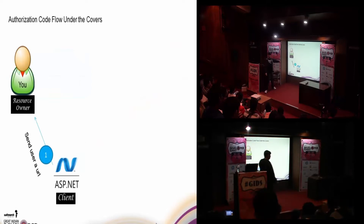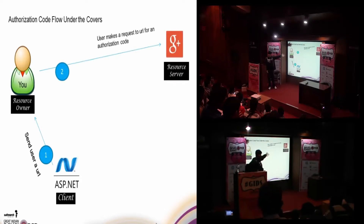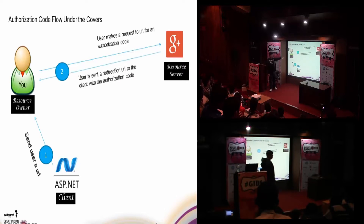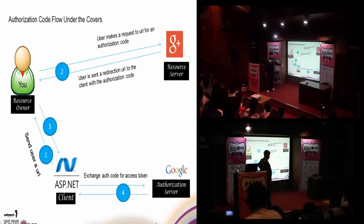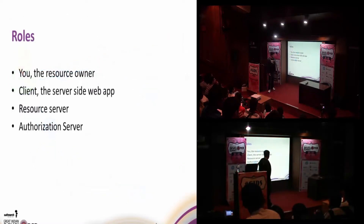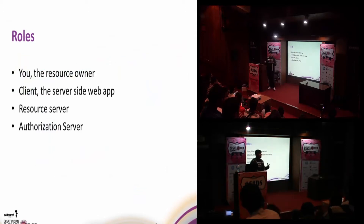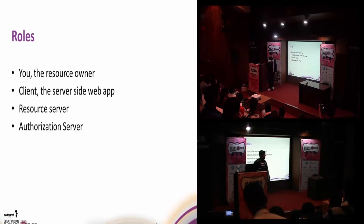Just to recap once again what happens: we send a URL to the user's browser. This URL is for the resource server with a bunch of parameters. The user makes this request, gets back an authorization code if everything went well and the user approved. With this authorization code, the user is redirected to the client. The client gets the authorization code, makes another request exchanging it for the access token. Once the client has the access token, it sends it to get the data from the resource server. The parties involved are: the resource owner (you), the client making requests on your behalf, the resource server hosting your data, and the authorization server.